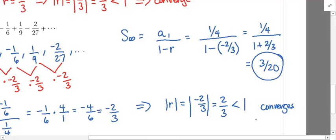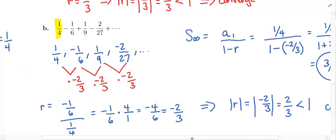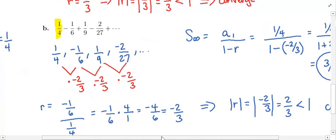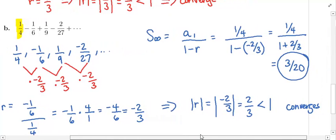This infinite series converges because the common ratio's absolute value is less than 1. If we do 1/4 minus 1/6 plus 1/9 minus 2/27 and keep adding infinitely many terms, that sum is going to be 3/20.